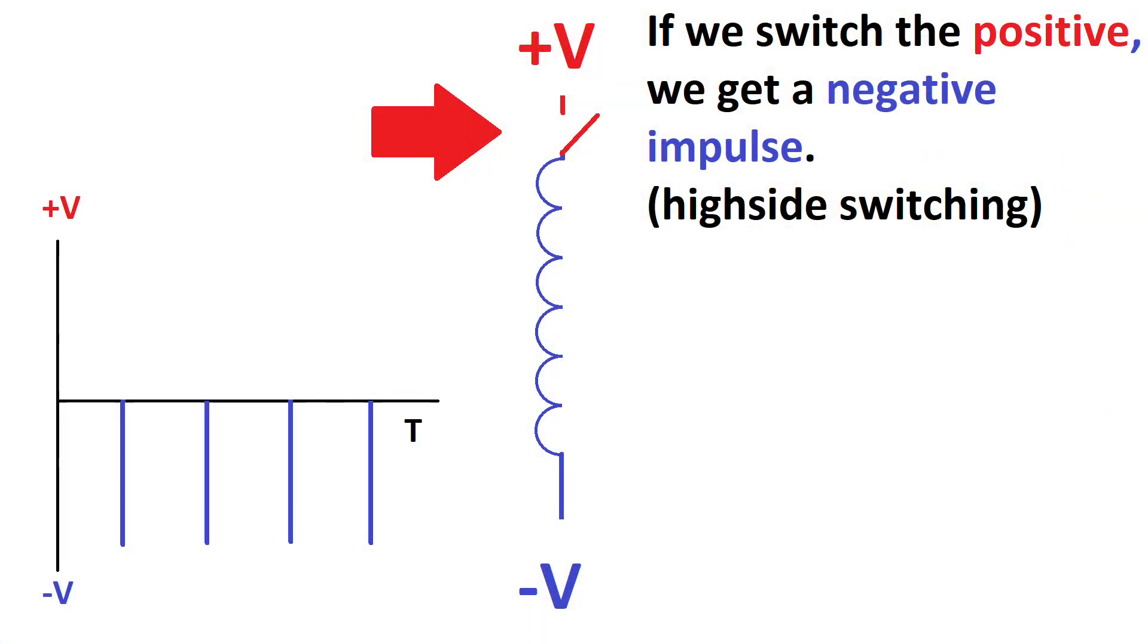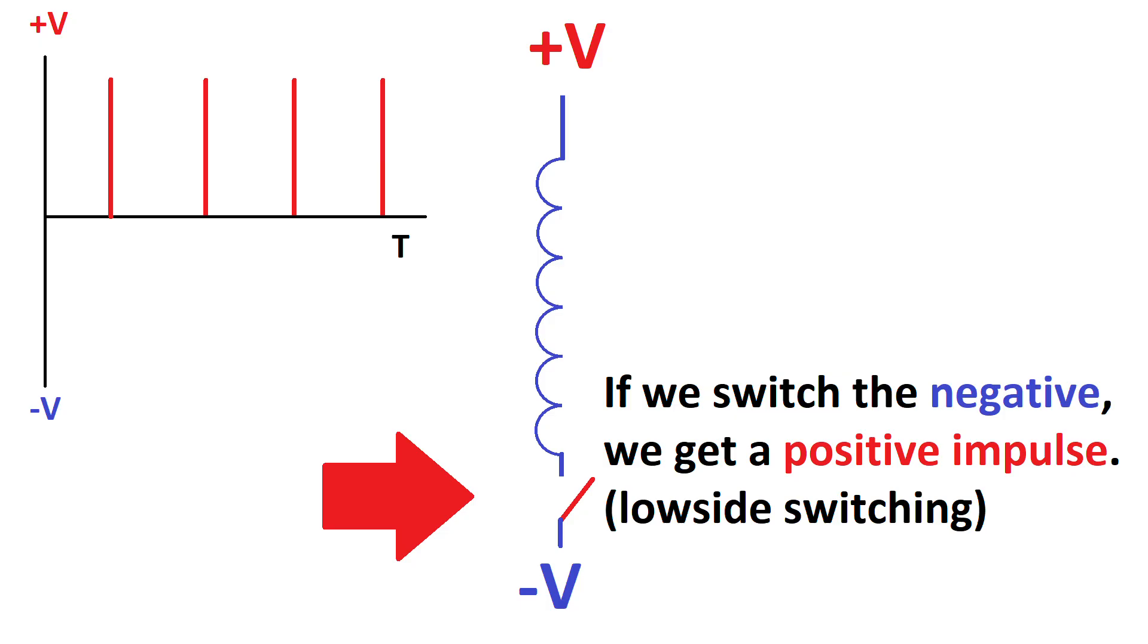If we switch the positive voltage supply to the coil we get a negative impulse. And if we switch the negative voltage supply of the coil we will get a positive impulse. This is due to Lenz's law. What you put in is opposite to what you get out basically.